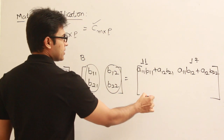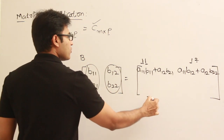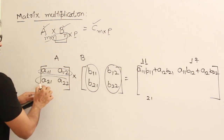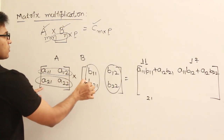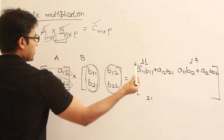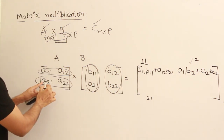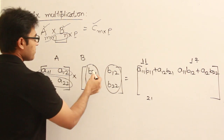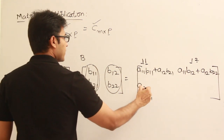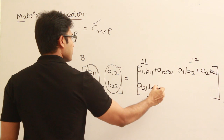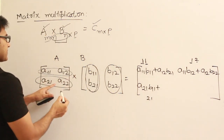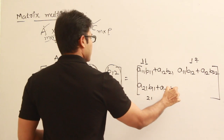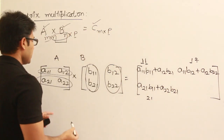For the element at index 2,1: take the second row from A and the first column from B, multiply them and sum them up. So C21 equals A21·B11 plus A22·B21.